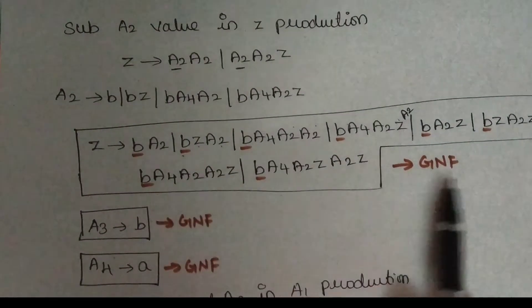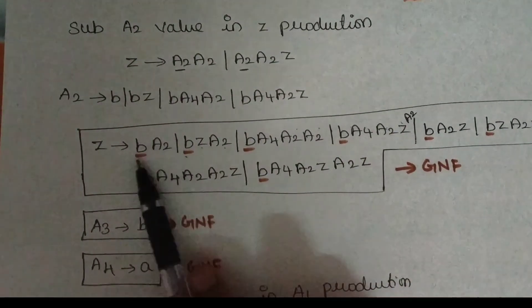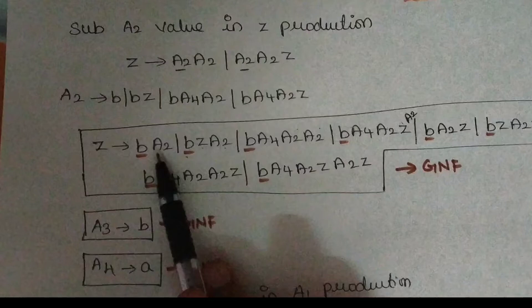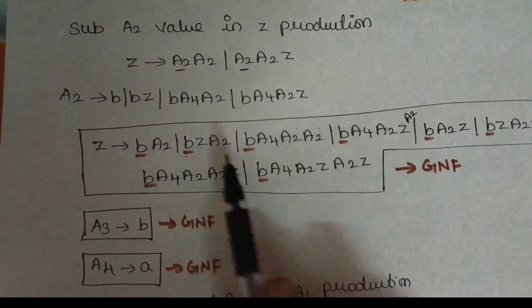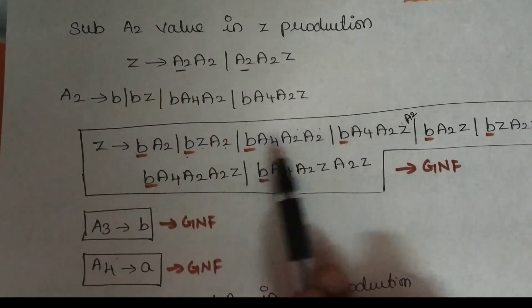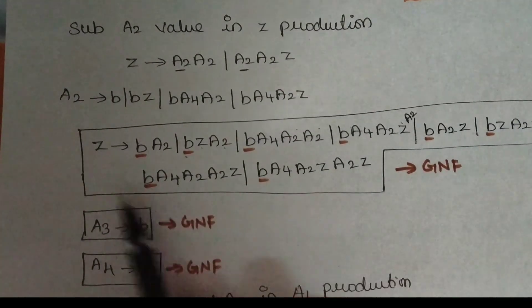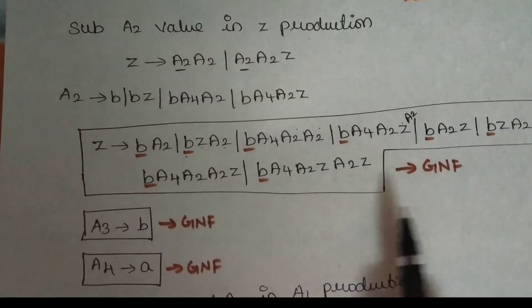So if Z is updated in the production, there is full Greibach Normal Form: one terminal, any number of non-terminals. One terminal, any number of non-terminals. Check this out.